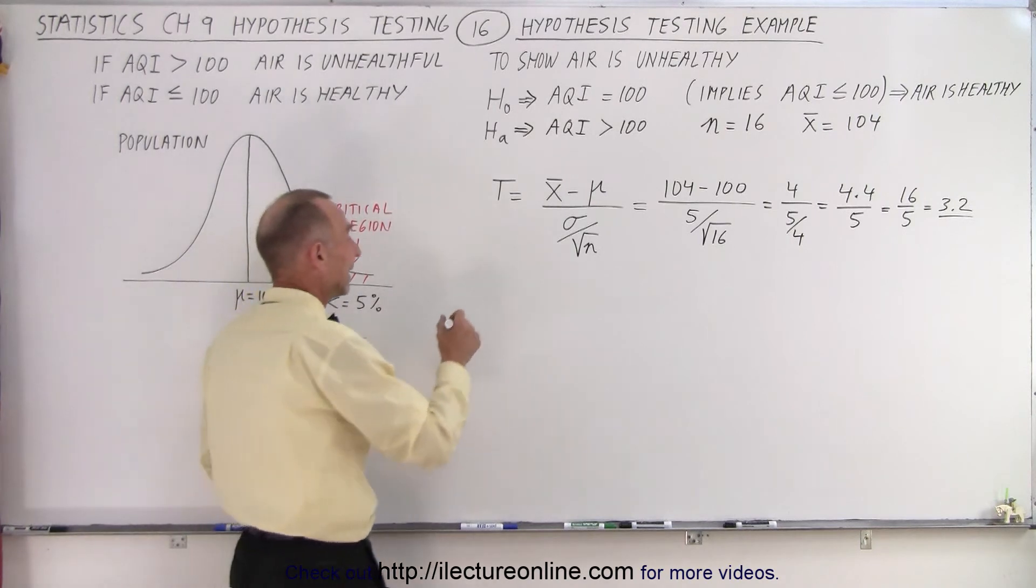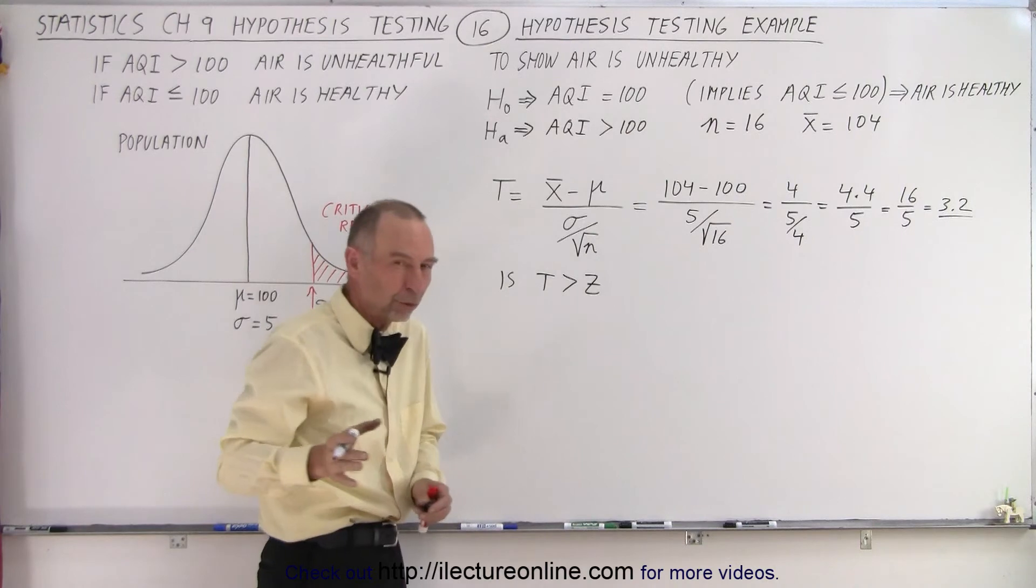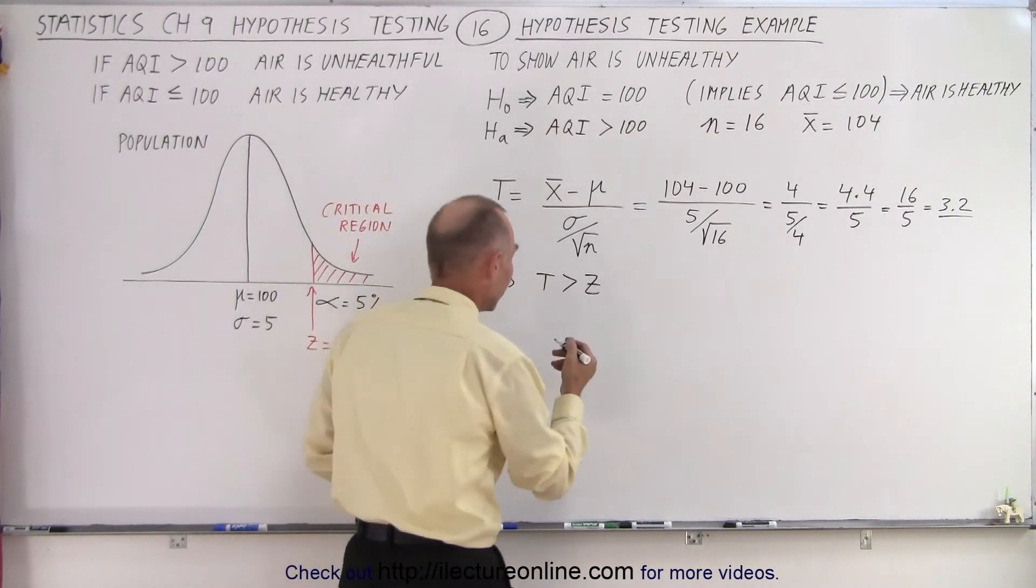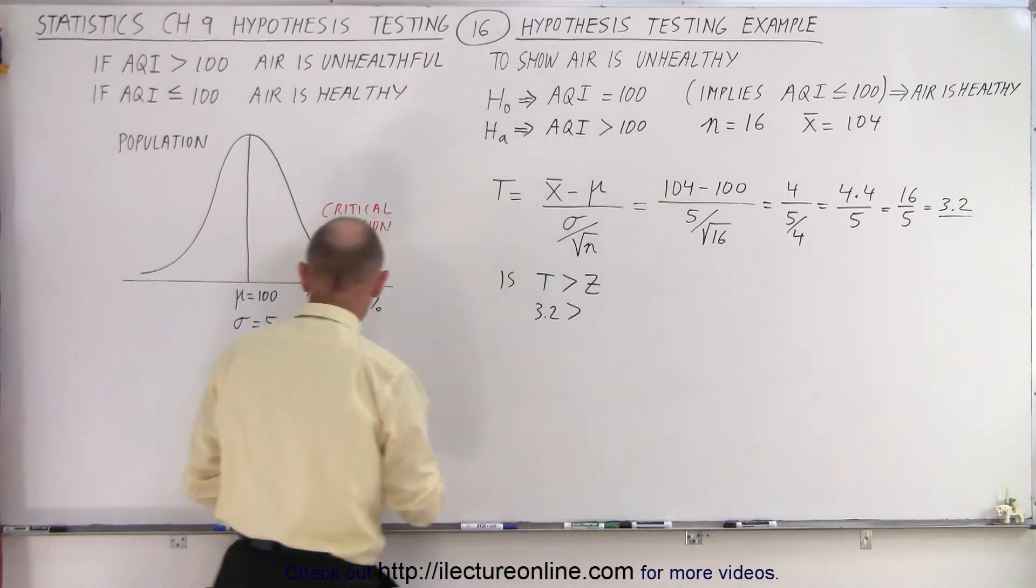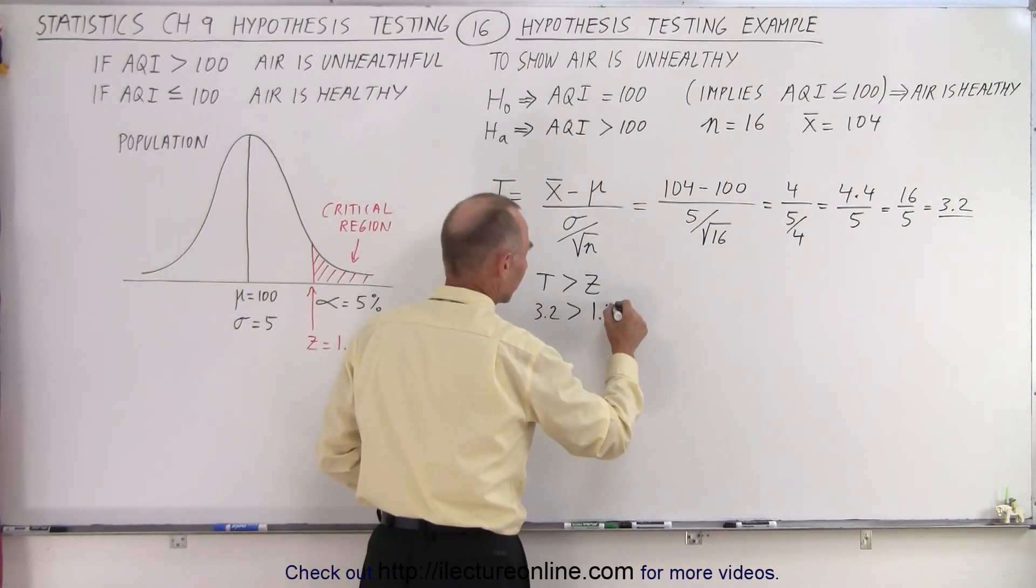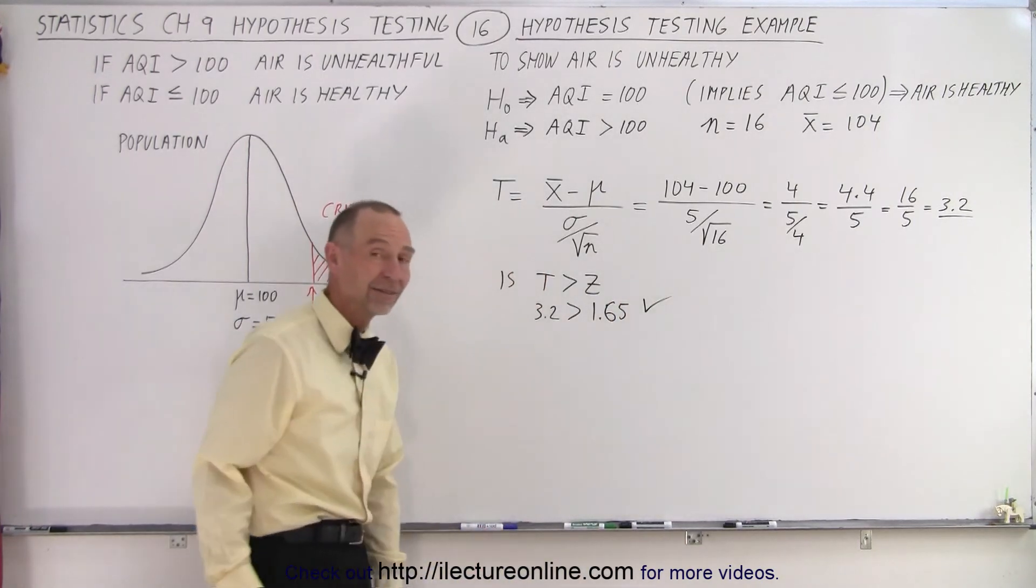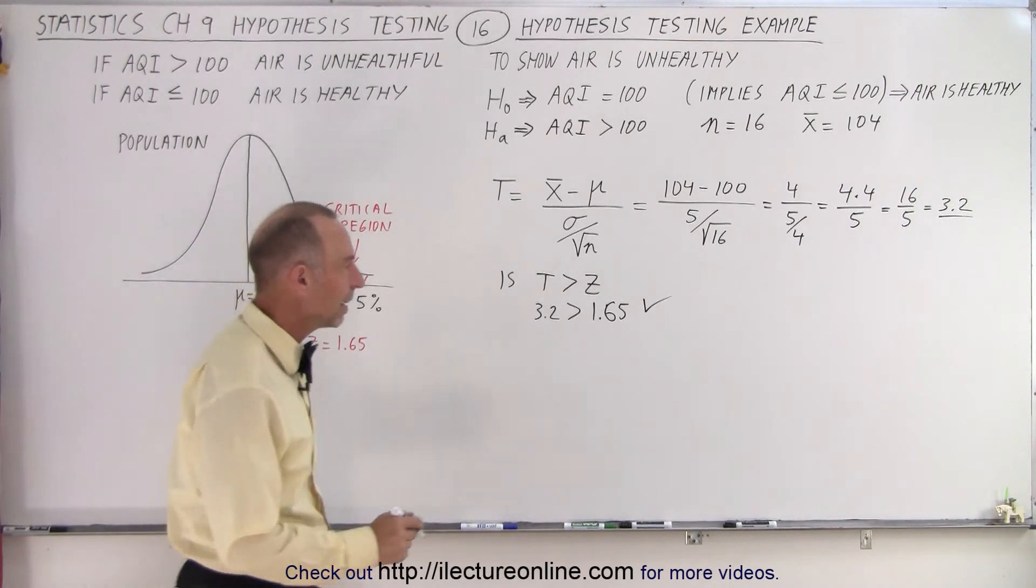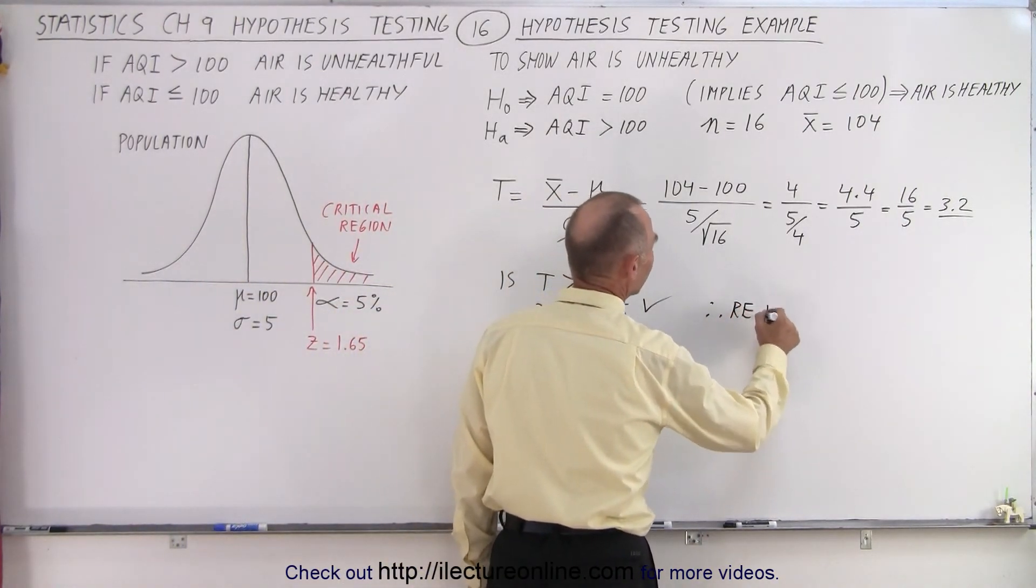Now, the question is, is T greater than Z? Because if it is, we're going to reject the null hypothesis. So in this case, T being 3.2, is that greater than 1.65? And that's indeed the case. True, T is greater than Z, and therefore, we're going to reject the null hypothesis.